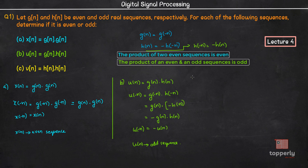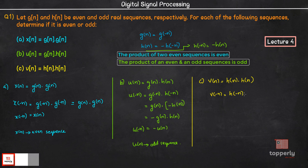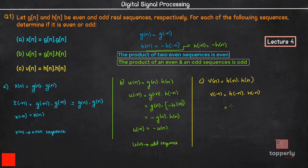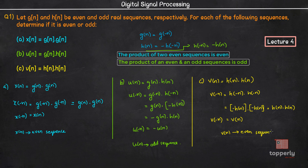Coming to the last subpart, we have v(n) equal to h(n) times h(-n). Let us see what v(-n) is. v(-n) equals h(-n) times h(--n), which is h(-n) times h(n). We know h(-n) equals minus h(n), so this becomes minus h(n) times h(n), which equals minus h(n) times minus h(n), giving us h(n) times h(n), which equals v(n). Therefore v(n) is an even sequence. To generalize: the product of two odd sequences is always even.